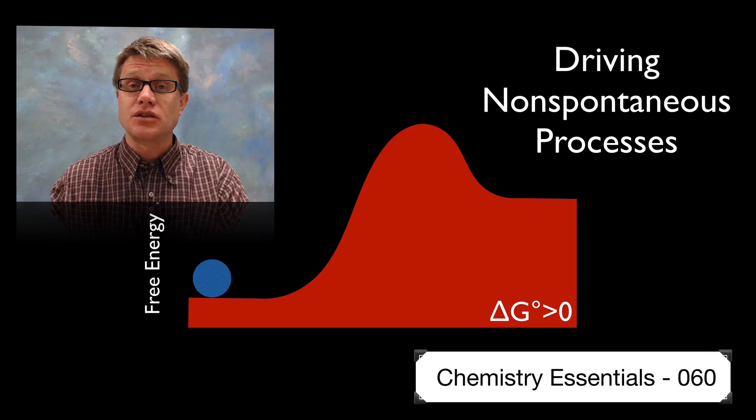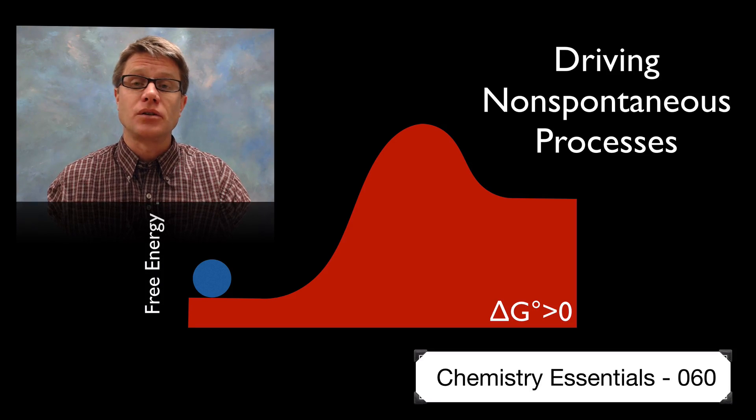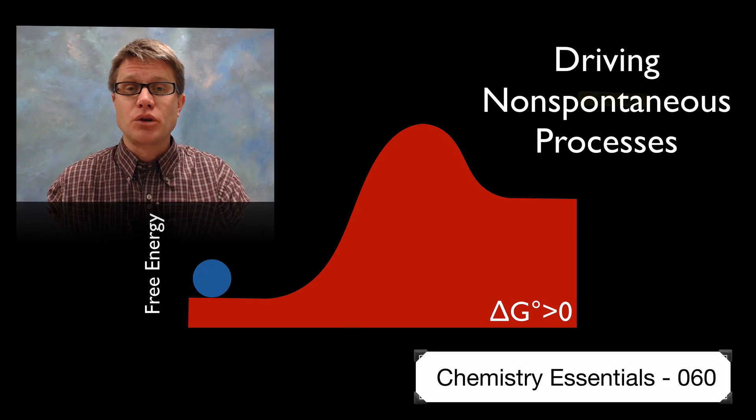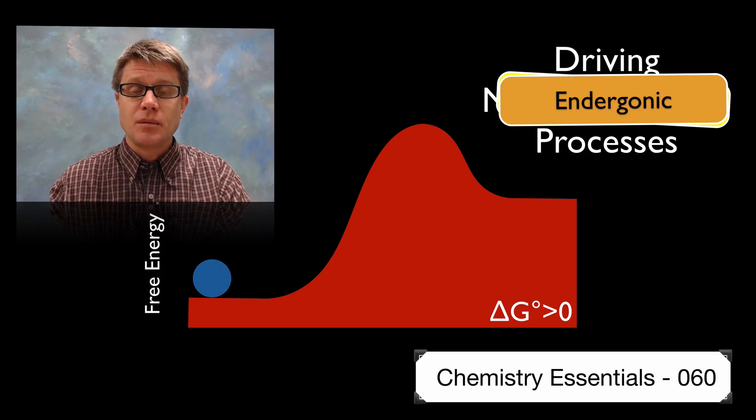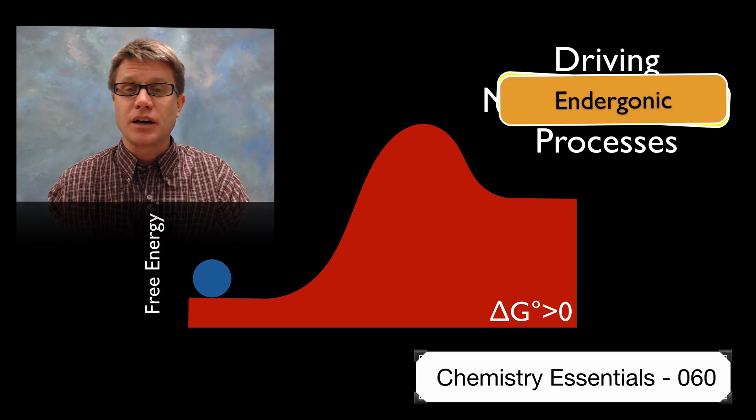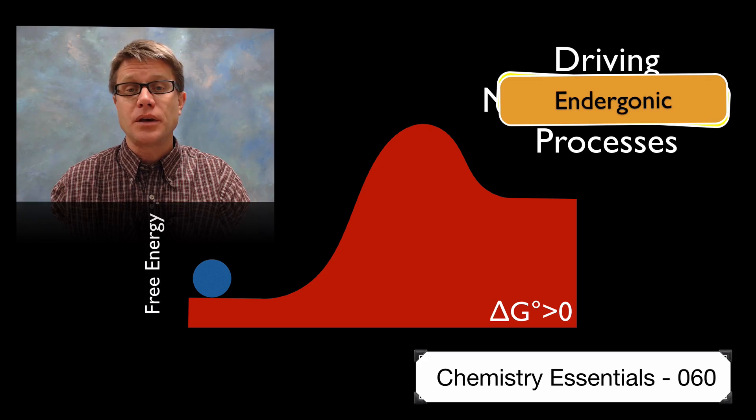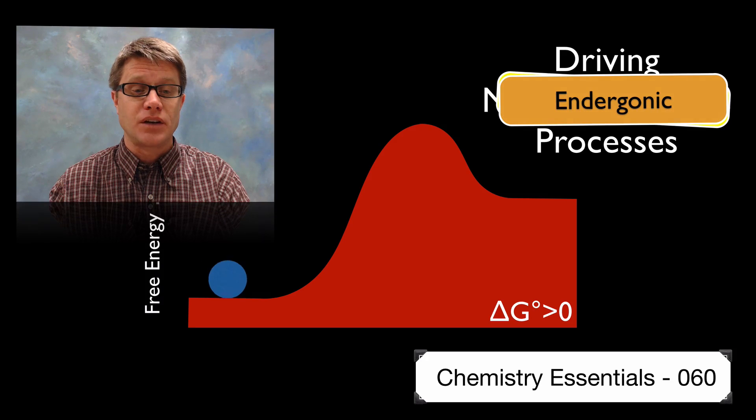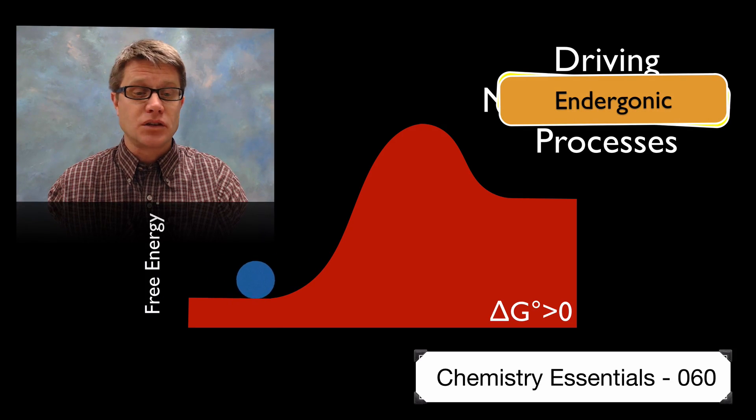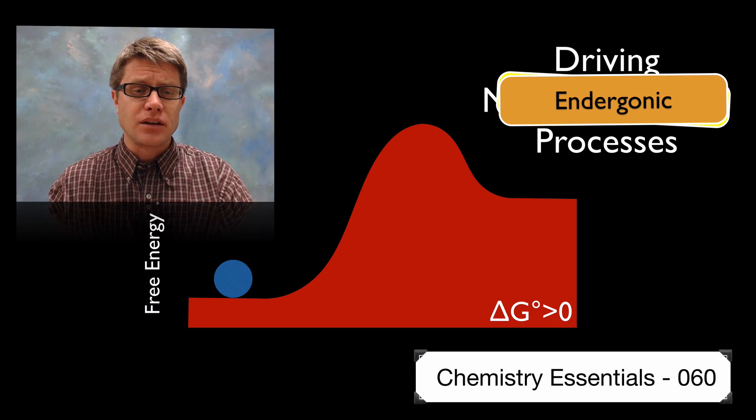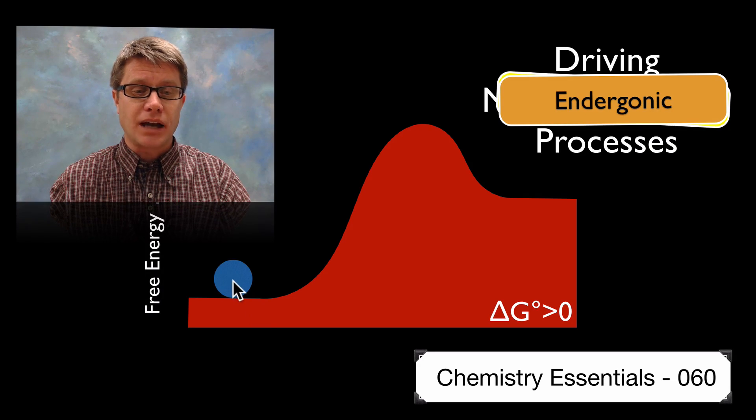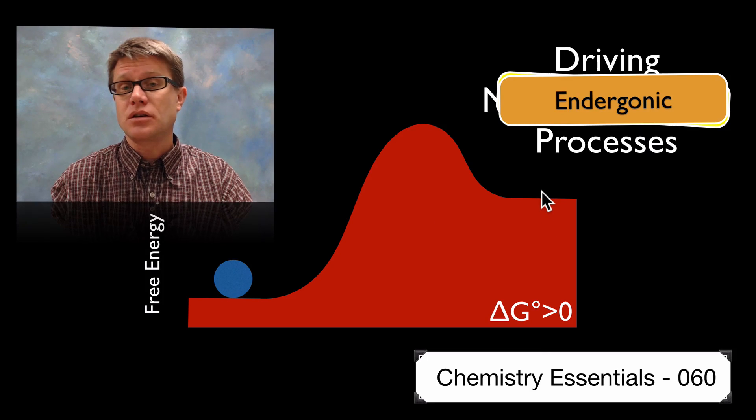Those are processes that don't occur without external energy. We also call them thermodynamically non-favorable or endergonic. If we look at a free energy diagram, we're essentially looking at an uphill reaction where we have a positive delta G. If we shove on it, it's just going to return to where it was before. So how do we lift that when the reactants actually have less free energy than the products do?